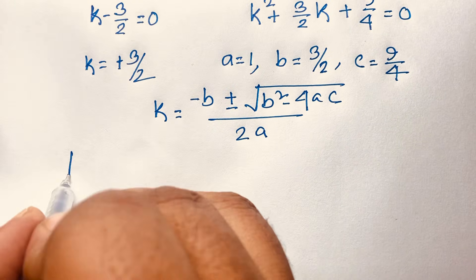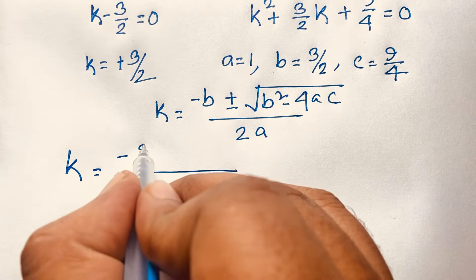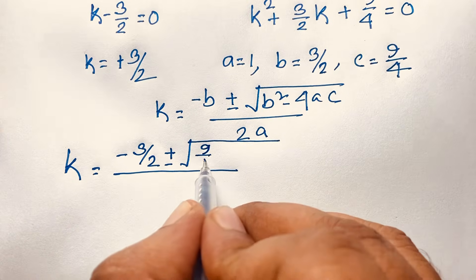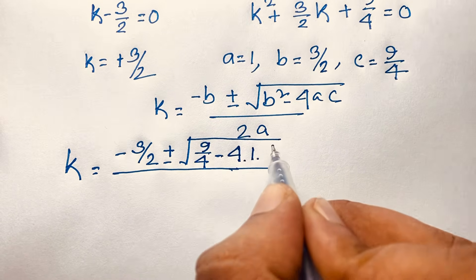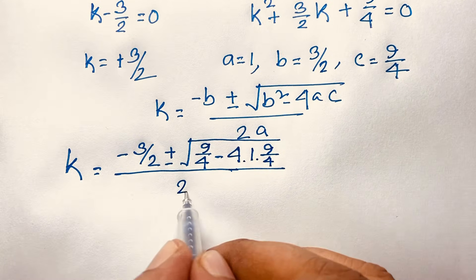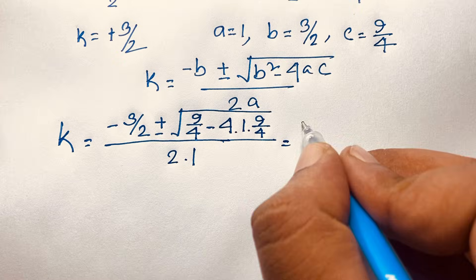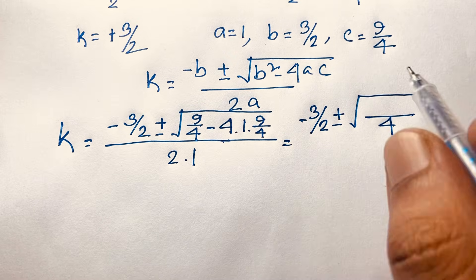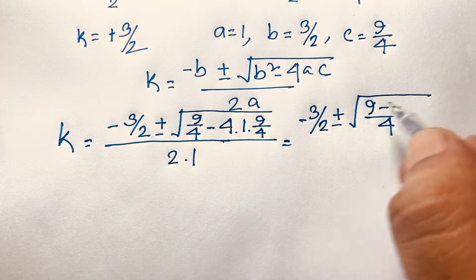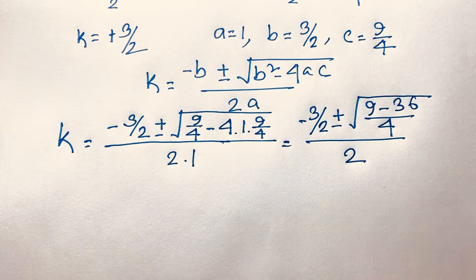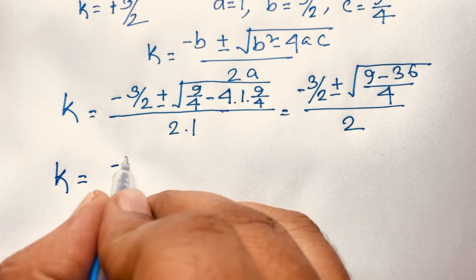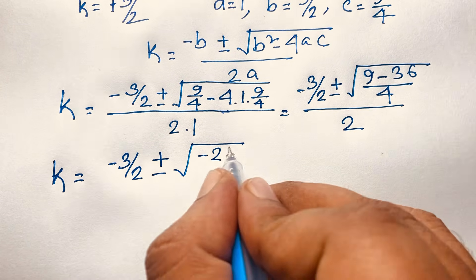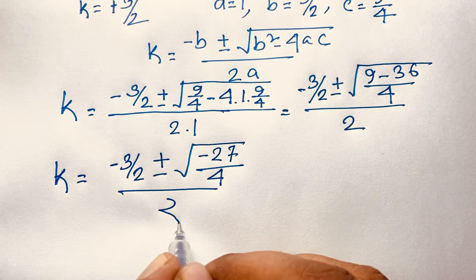Substituting in: k = (−3/2 ± √((3/2)² − 4·1·(9/4))) / (2·1). That gives us (−3/2 ± √(9/4 − 9)) / 2. Finding a common denominator of 4: this becomes (−3/2 ± √((9 − 36)/4)) / 2 = (−3/2 ± √(−27/4)) / 2.